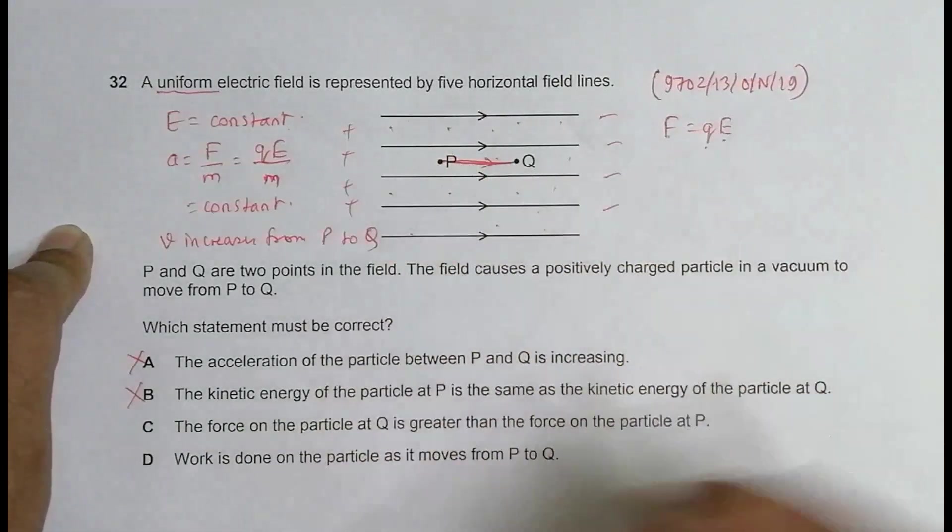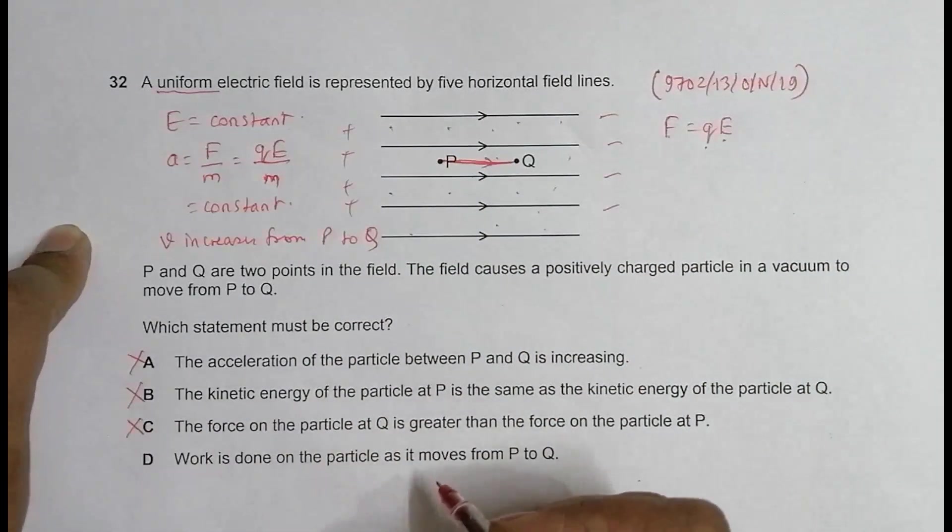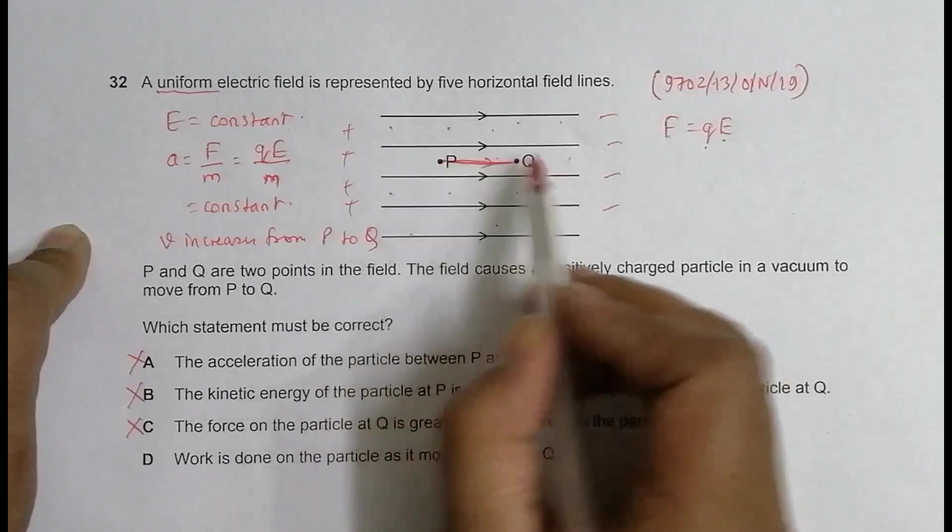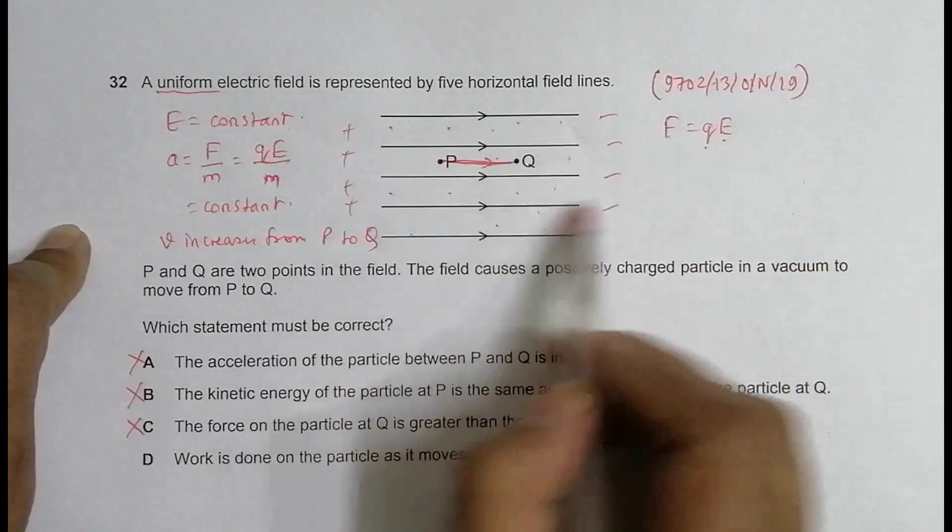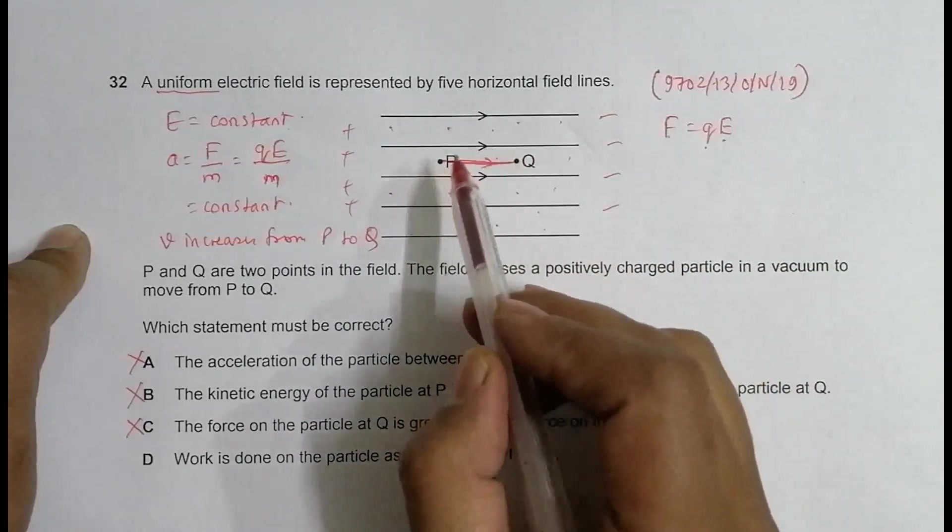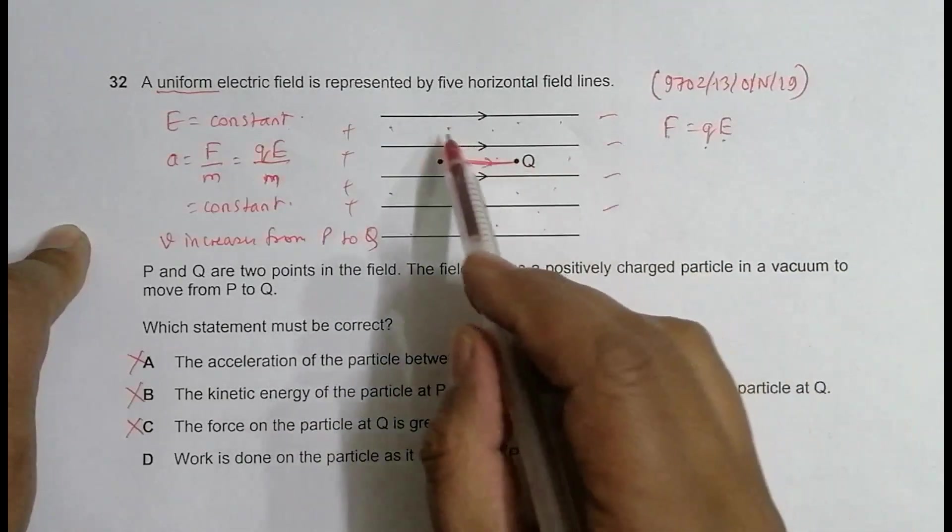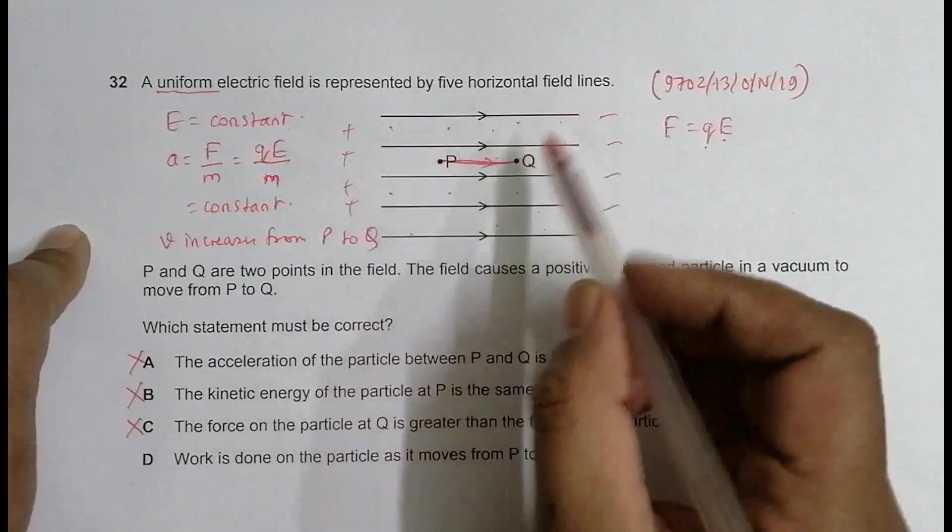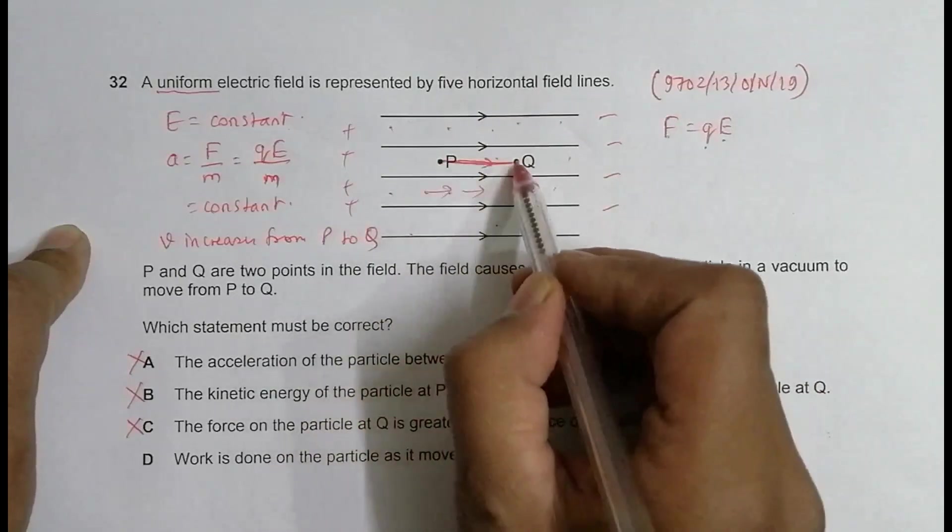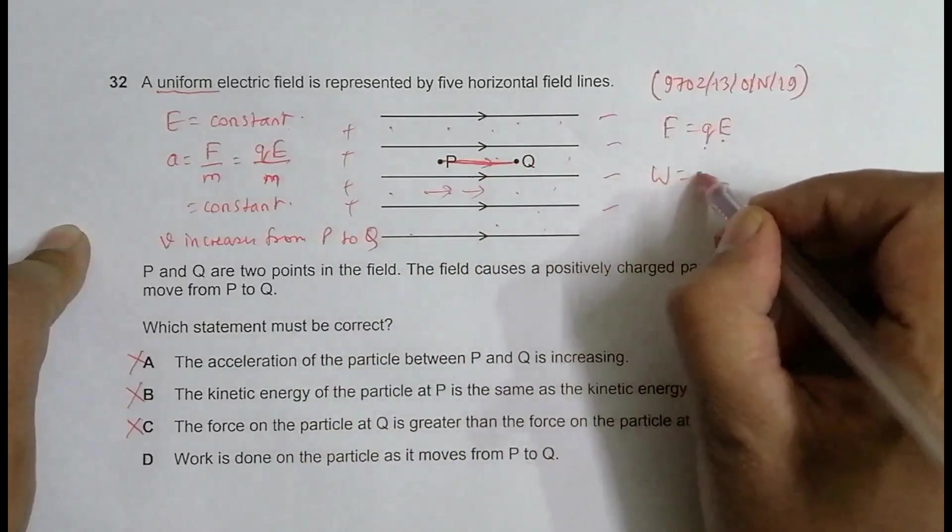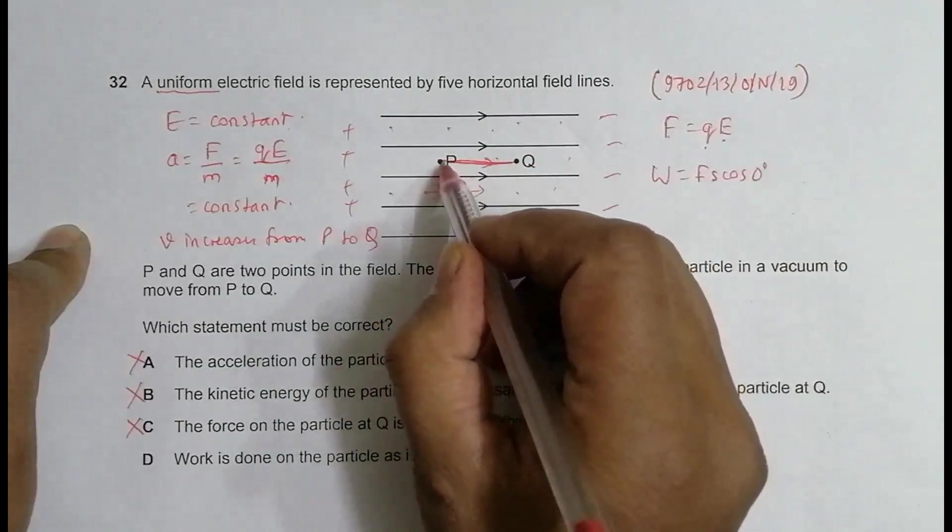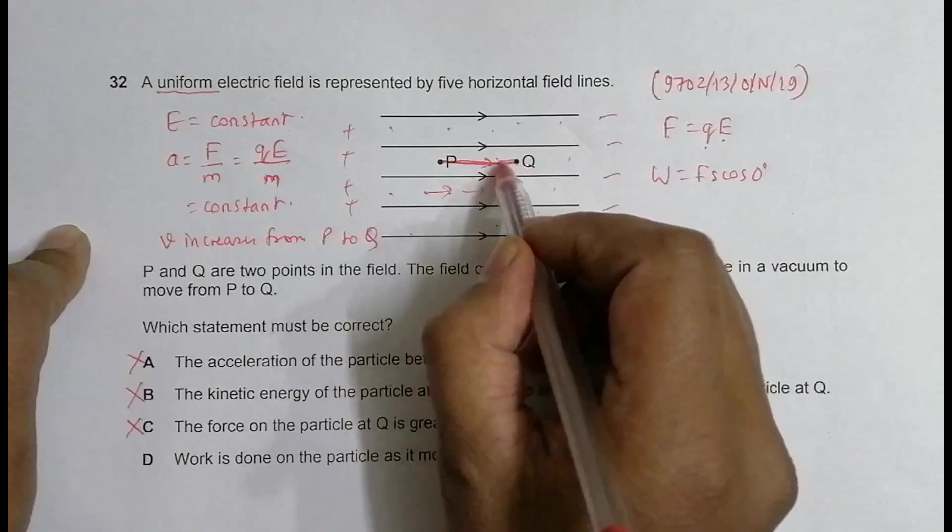The last one says that work is done on the particle as it moves from P to Q. Yes, it's true because force has been applied and there is displacement in the same direction as the force. The force is of course on the positive charge particle, the force will be in this direction and displacement is in this direction as well. So work should be equal to F into S cos of zero degrees because the displacement is exactly in the direction of the field lines itself. So it's equal to FS. Work is happening here.